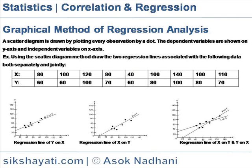Graphical method of regression analysis. A scattered diagram is drawn by plotting every observation by a dot. The dependent variables are shown on the y-axis and independent variables on the x-axis. The dots are connected to draw regression lines depicting the best mean value of one variable corresponding to the mean values of the other.